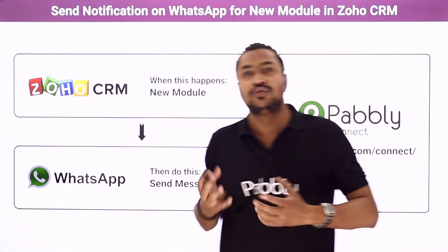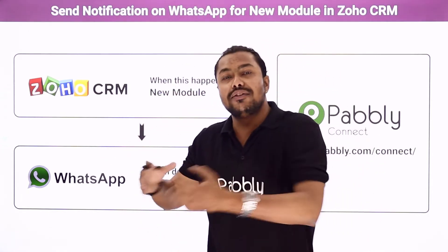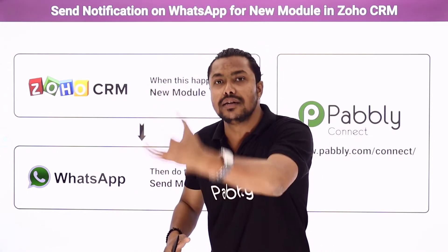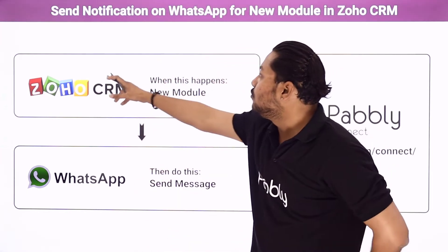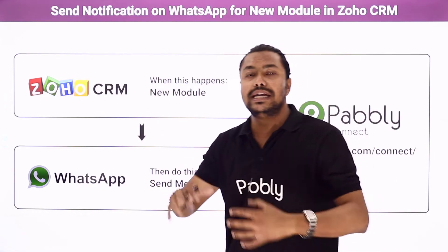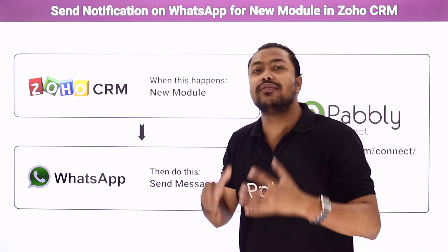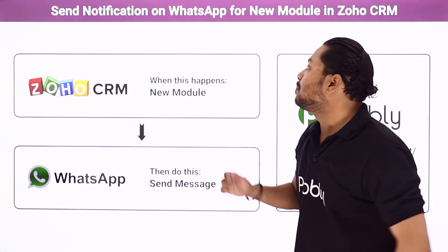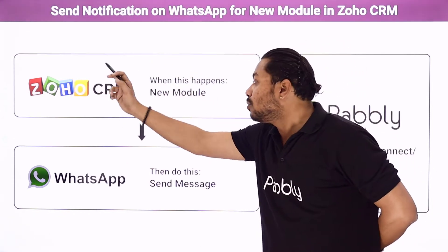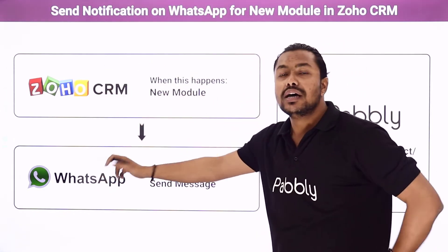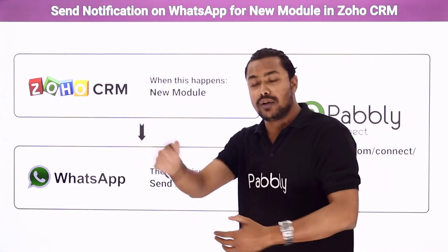Zoho CRM is an application which is used for marketing and several other lead-collecting purposes. Now, whenever we have a new module — for example, whenever we have a new lead — a message to that lead will automatically be sent through our WhatsApp to his or her WhatsApp.